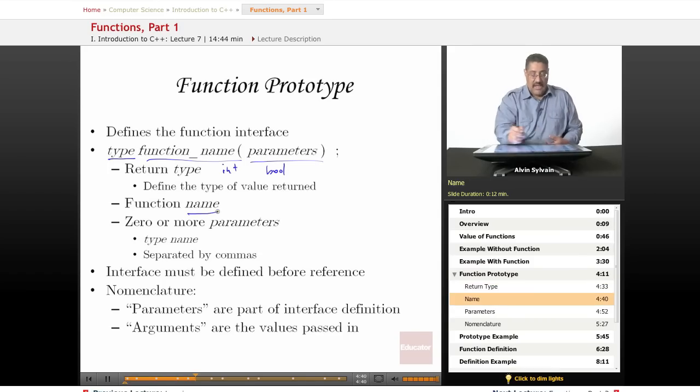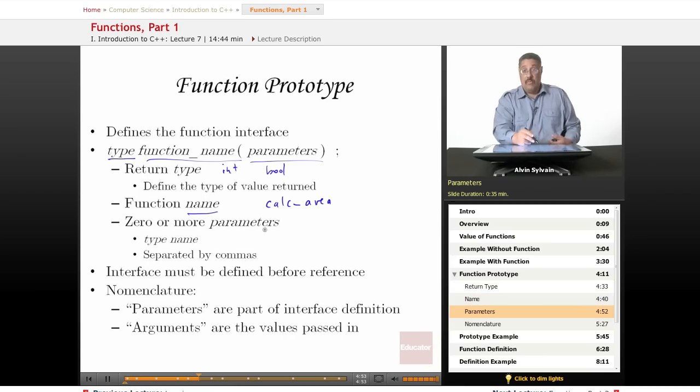You give it a unique name that's not a keyword. Generally, a verb is a good name, like we want to calculate something—calculate area. Then you have zero or more parameters. The parameters is usually a type, very often with a name also.